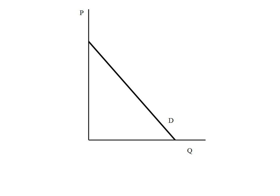Here's my downward sloping demand curve. It's linear, so marginal revenue is going to be twice as steep. That means the marginal revenue curve should intersect the Q axis halfway between zero and where the demand intersects the Q axis.